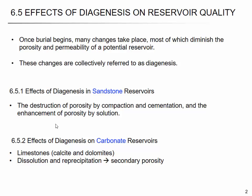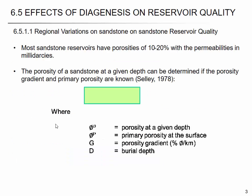In sandstone reservoirs, the primary change is compaction. Porosity reduction is normally caused by compaction, and secondary reduction can occur by cementation or be increased by dissolution. In carbonate, compaction is not the primary thing — secondary effects like cementation and dissolution are more dominant. Generally, the sandstone reservoir has porosity of 10 to 20%. Permeability larger than 100 millidarcies is very good quality, and less than 10 millidarcies is a very poor, tight reservoir. On average, it's about tens of millidarcies.